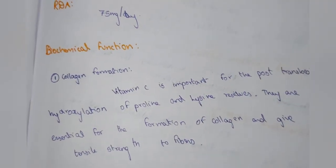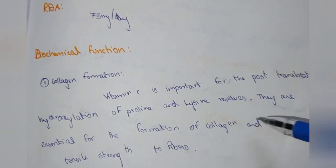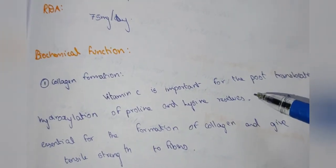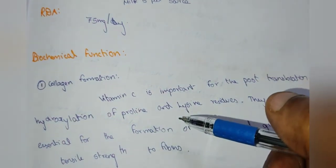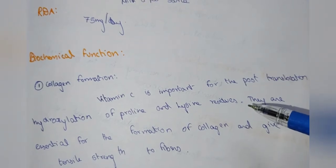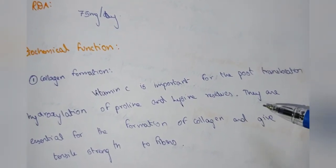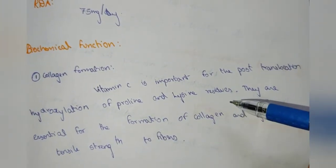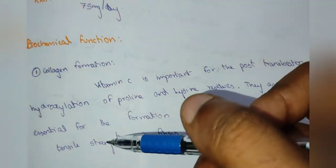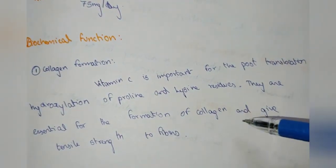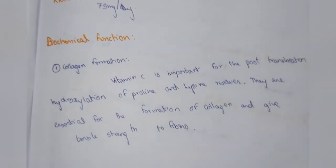Biochemical functions: Vitamin C is used in collagen formation. It is important for post-translational hydroxylation of proline and lysine. These hydroxylated amino acids are essential for the formation of collagen and give tensile strength to collagen fibers.